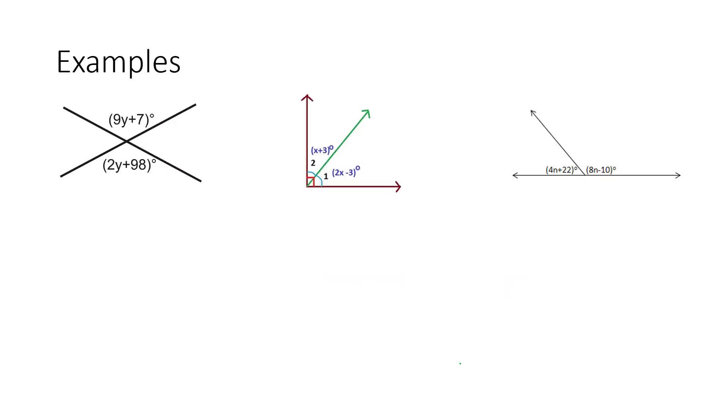So to look at these concepts, I've got three examples here. And what you'll see first with this first example, we've got two angles that are across from each other. One measures 9y plus 7. The other measures 2y plus 98. Because they're across from each other, because they're congruent angles, we can say that this top angle is the same as the bottom angle. Or the 9y plus 7 is equal to the 2y plus 98.